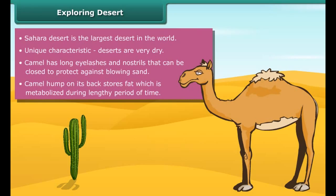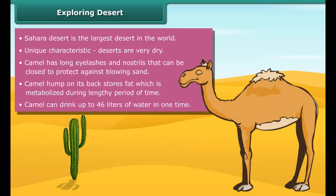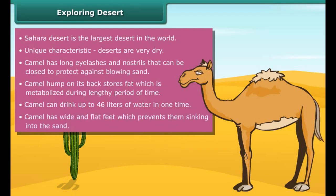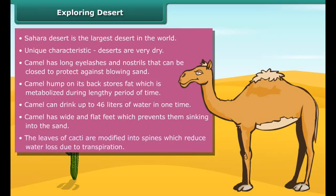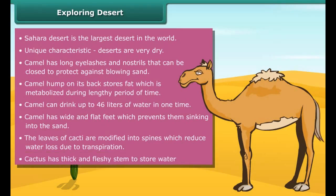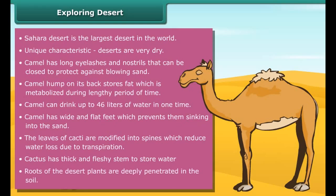Plants and animals living in deserts have modified features to survive in such extreme conditions. The camel has many adaptations specifically suited to desert habitat. It has long eyelashes and nostrils that close to protect against blowing sand. A large hump on its back stores fat, which is metabolized during lengthy periods. They can drink up to 46 liters of water at one time and can live without water for a week.